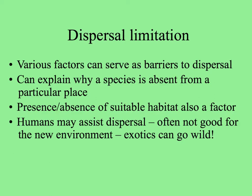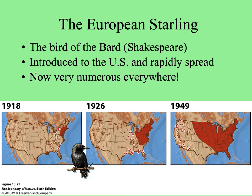All too often, humans bring species not native to areas, and exotic species can go wild, turning into pests. One such bird was brought to the United States for its great beauty and song — Shakespeare wrote about the European starling. Some positive-thinking people brought the starling to the U.S. in the early part of the 20th century. You can see they brought it to the northeast, and the starling started dispersing. Now it's very numerous everywhere — this is just until 1950, but now the whole United States has lots of starlings, including South Florida.